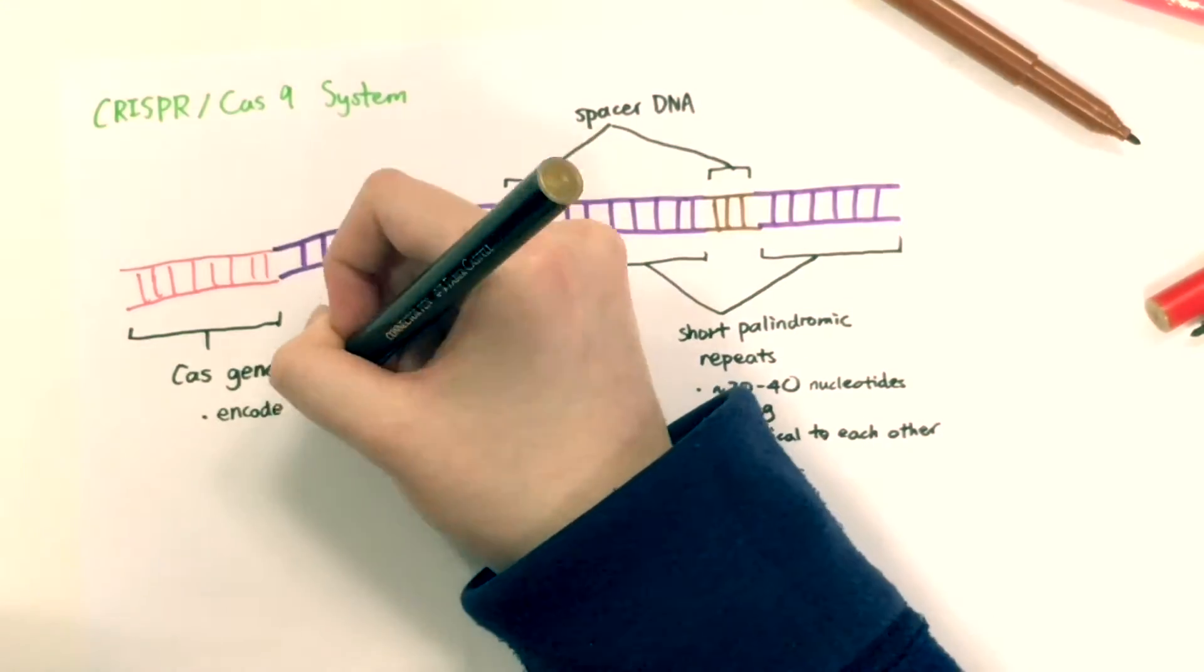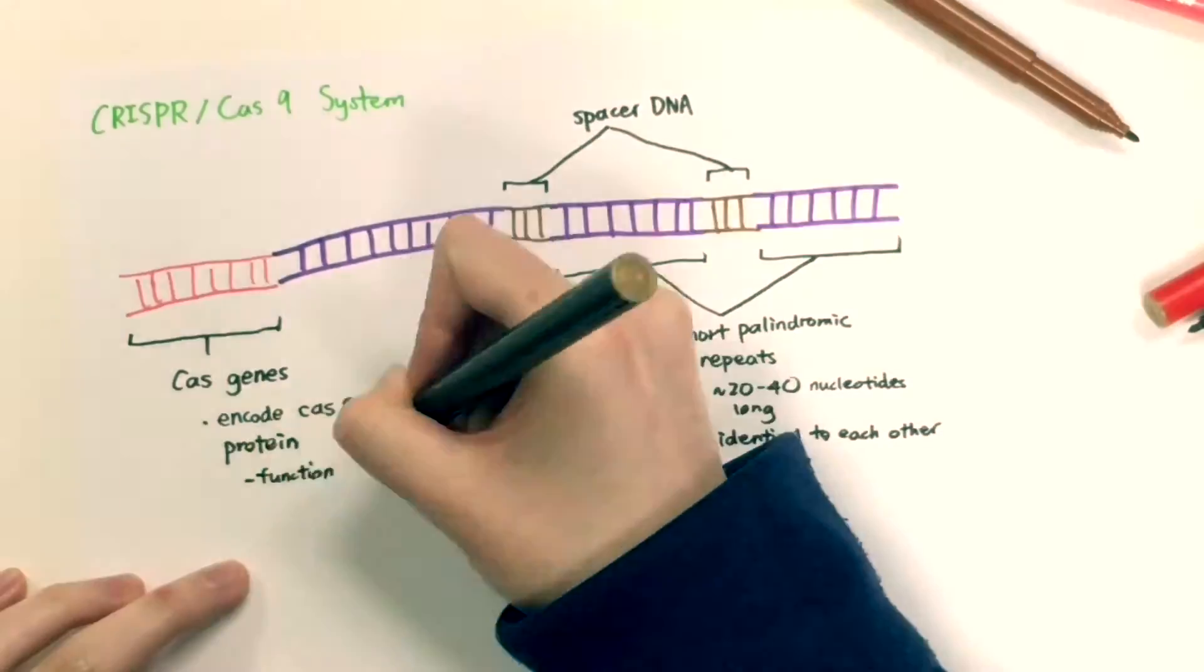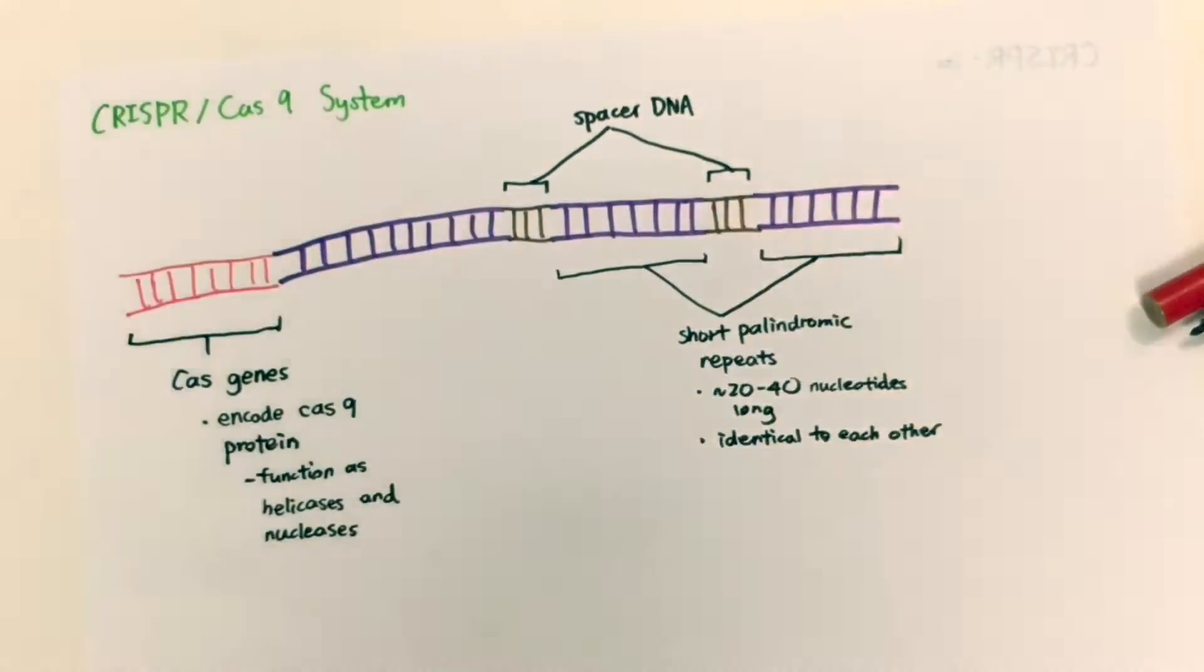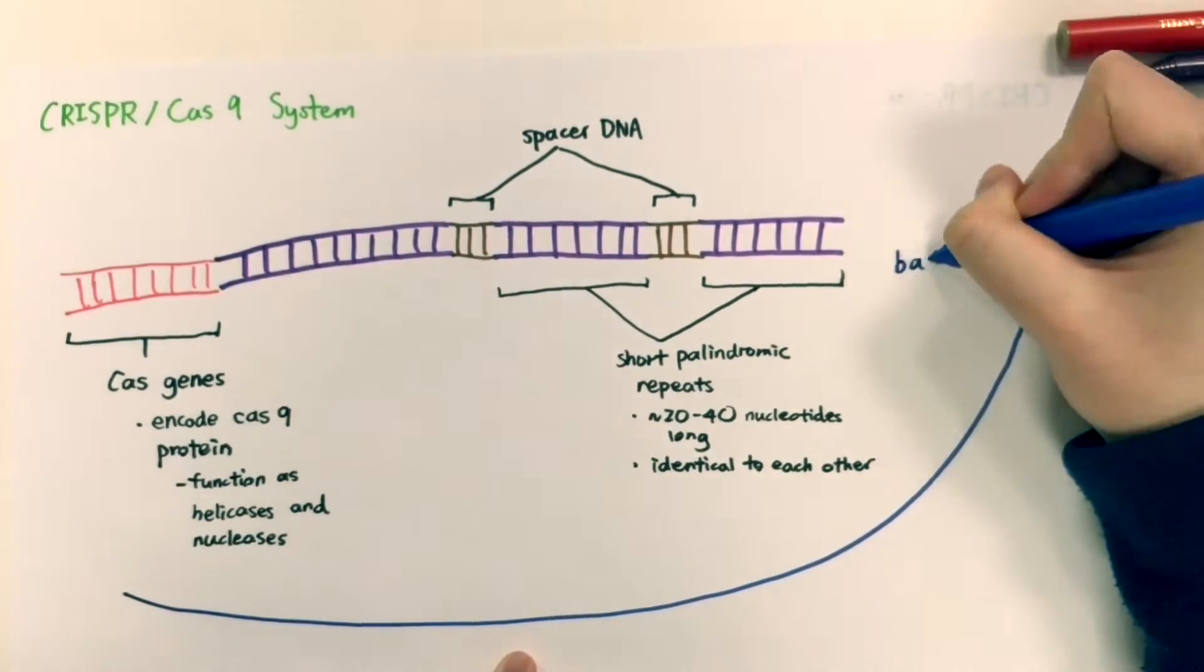Cas genes are transcribed and translated to Cas9 protein, which acts as helicase to unwind DNA and nuclease to cut DNA.